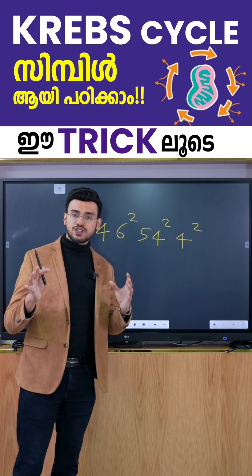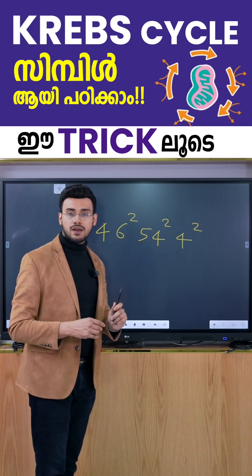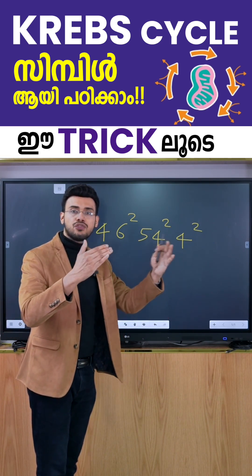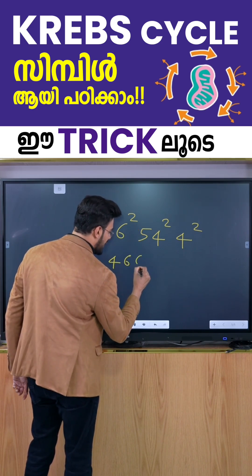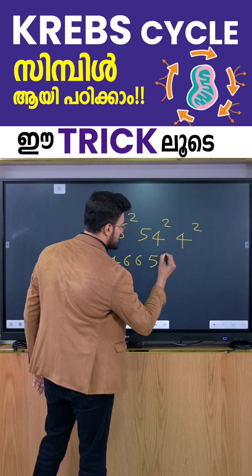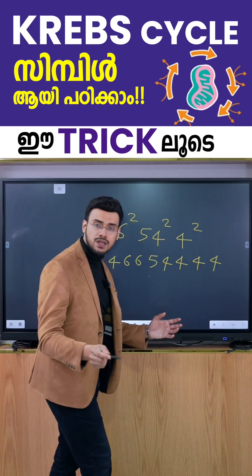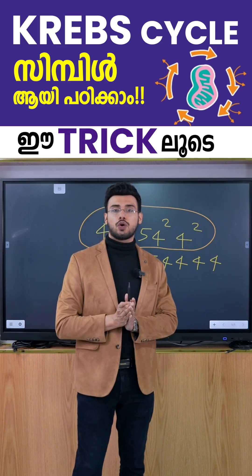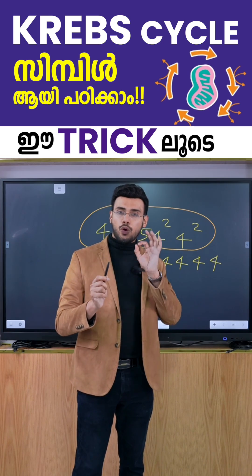This is about carbon count. The carbon numbers per step are: 6 carbons, then 5 carbons, then 4 carbons. So the pattern is 6, 5, 4 — showing how many carbons are in each intermediate at each step of the cycle.